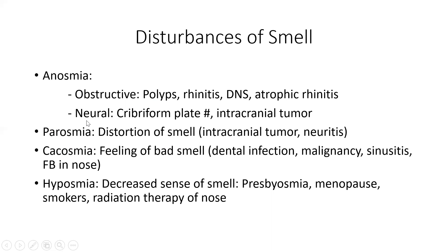Neural anosmia occurs because the olfactory neurons pass through the cribriform plate to reach the brain. If there is a fracture of the cribriform plate, there will be injury to the olfactory neurons leading to anosmia. Similarly, an intracranial tumor can also lead to anosmia.